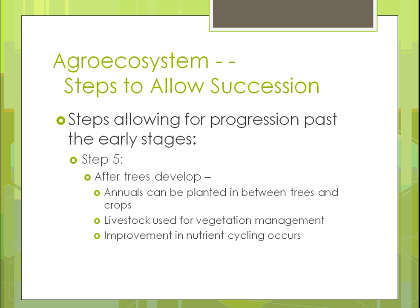Once the trees start growing up, you can plant different annuals in between them — even vegetables, as long as they can grow underneath since trees sometimes block the sun directly below them. You can also use livestock for vegetation management: if you have a fence, you can move livestock to areas where weeds are getting out of hand. Sheep are an extremely effective measure for getting rid of weeds or grasses — they can clean an area down to nothing.